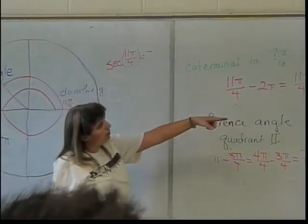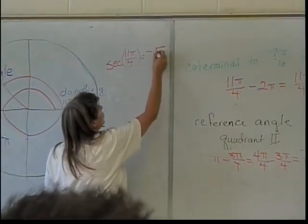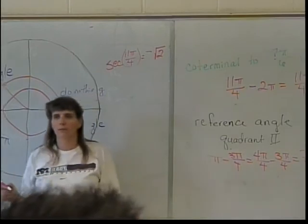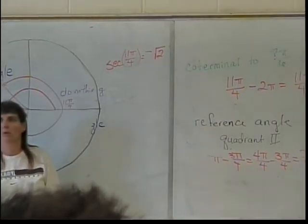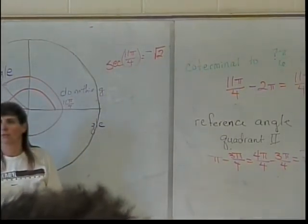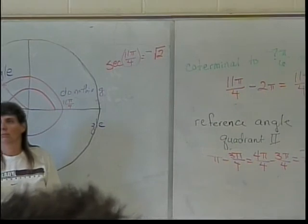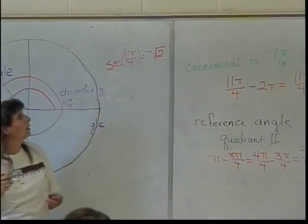And, all I do is flip my cosine over, so I end up with the square root of 2 when I simplify it. You could write 2 over square root of 2 if you wanted, but you don't have to. Okay.